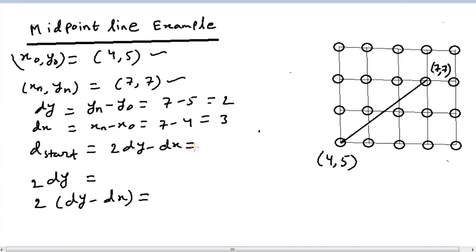So, d star would be 2 into 2 minus 3 which gives us 4 minus 3 equals 1. Twice dy would be 2 into 2 equals 4, and 2 into dy minus dx would be 2 into 2 minus 3 equals minus 2.